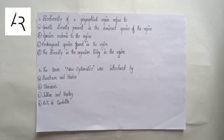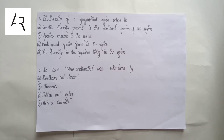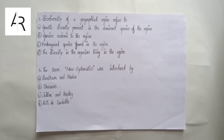These questions are taken from the Living World chapter — a very easy chapter. Question number 1: Biodiversity of a geographical region refers to? The terms are clear here. Biodiversity means organisms' diversity. If you look at option D — diversity in the organisms living in the region — that perfectly defines the term biodiversity. So the answer is option number D.